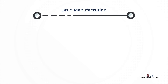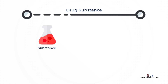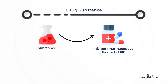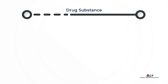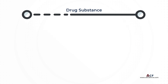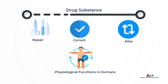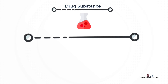To understand the drug manufacturing process, there are a few terms to know, as they form the basis of drug manufacturing. These are drug substance, drug products, and excipients. A drug substance is any substance or mixture of substances used in a finished pharmaceutical product (FPP) that is intended to provide pharmacological action or to otherwise have a direct impact in the diagnosis, remedy, mitigation, therapy, or prevention of disease, or to have a direct effect in repairing, correcting, or altering physiological functions in humans.